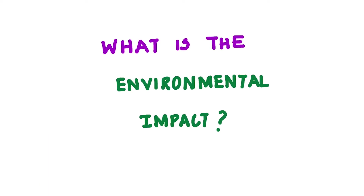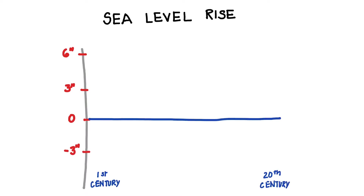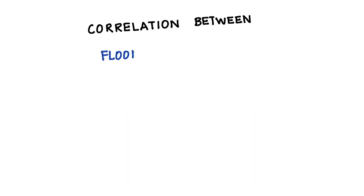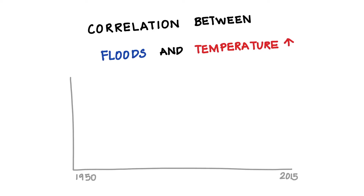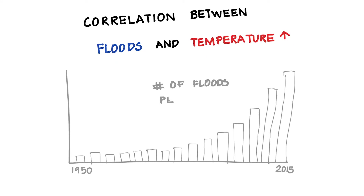What is the environmental impact? Over the previous 19 centuries, the net change in sea level was negligible. But in the 20th century, sea level has risen between 4 to 8 inches in different parts of the world, and unfortunately the increase is really accelerating. Here you can see a direct correlation between temperature levels and floods — as the global climate has warmed over the past several decades, the frequency of floods has also risen sharply.